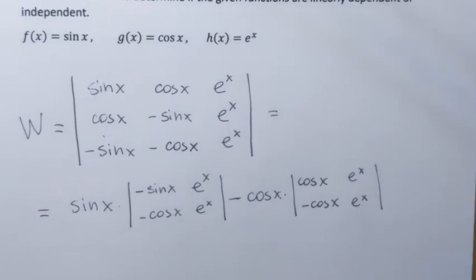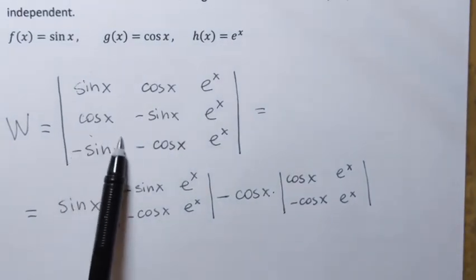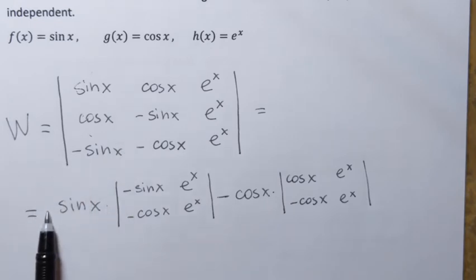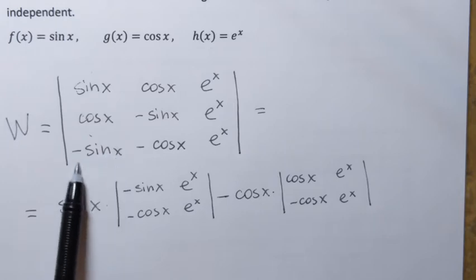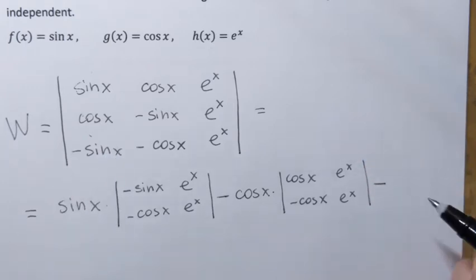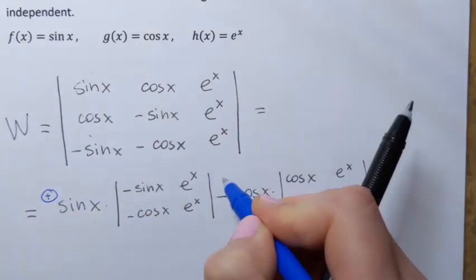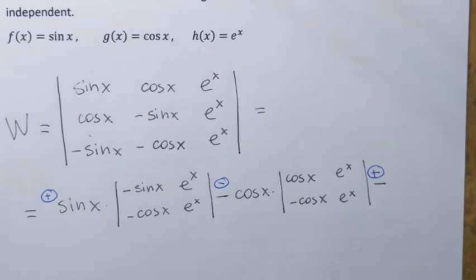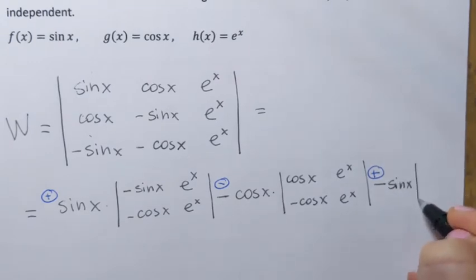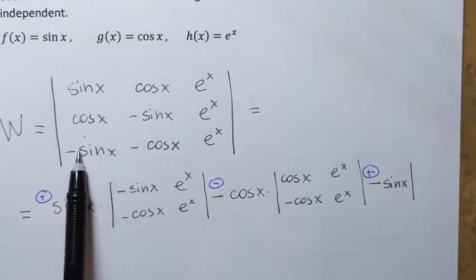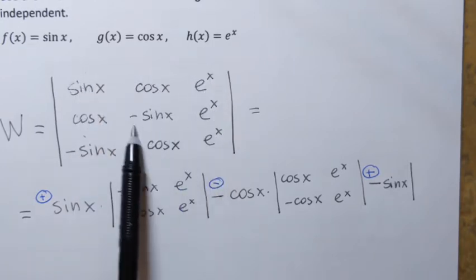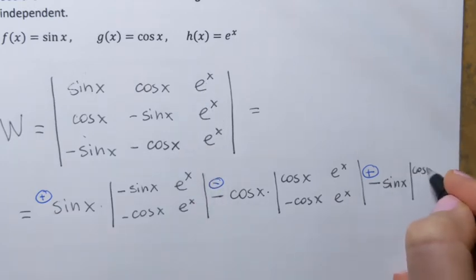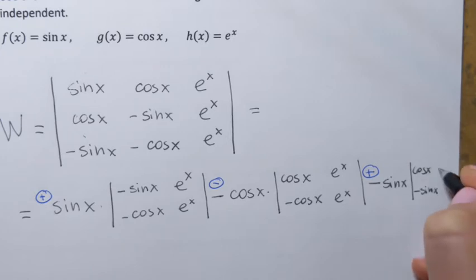Finally I move to the third element. I'm alternating signs — I used positive, then negative, and at the end I use positive again, meaning the sign of this element is preserved. So it ends up being plus sine of x multiplied by the determinant of the following matrix. I cross out row 3 and column 1, and the remaining elements form that matrix: cosine x, negative sine x, e to the power x, e to the power x.